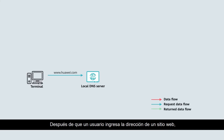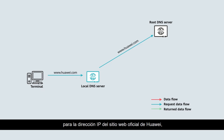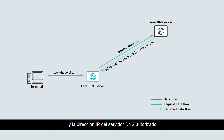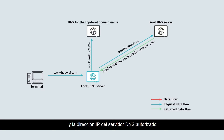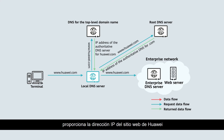After a user enters a website address, the local DNS server first queries the root DNS server for the top-level domain name. Using Huawei's official website as an example: after receiving a query from the local DNS server for the IP address of Huawei's official website, the root DNS server returns the name and IP address of the authoritative DNS server for the top-level domain name, namely .com. The local DNS server then queries this authoritative DNS server, which returns the name and IP address of the authoritative DNS server for the level 2 domain, namely huawei.com. The local DNS server then queries this authoritative DNS server, which provides the IP address of Huawei's website to the local DNS server, allowing the user to visit huawei.com.